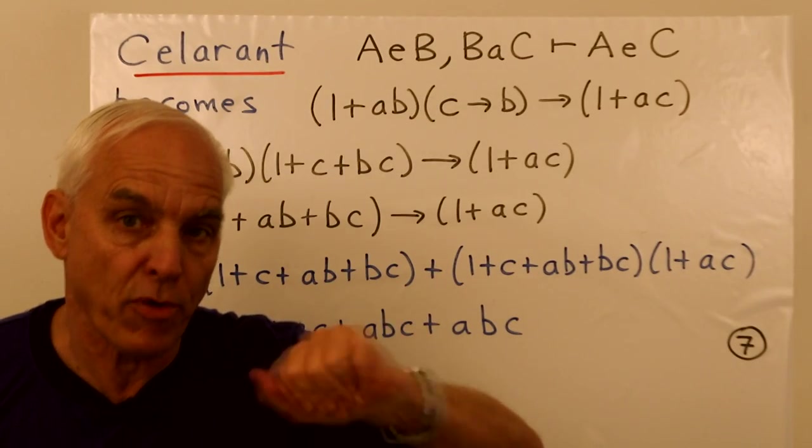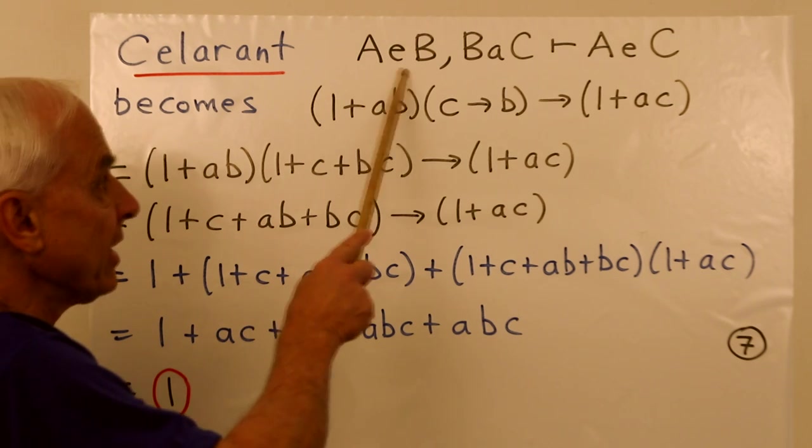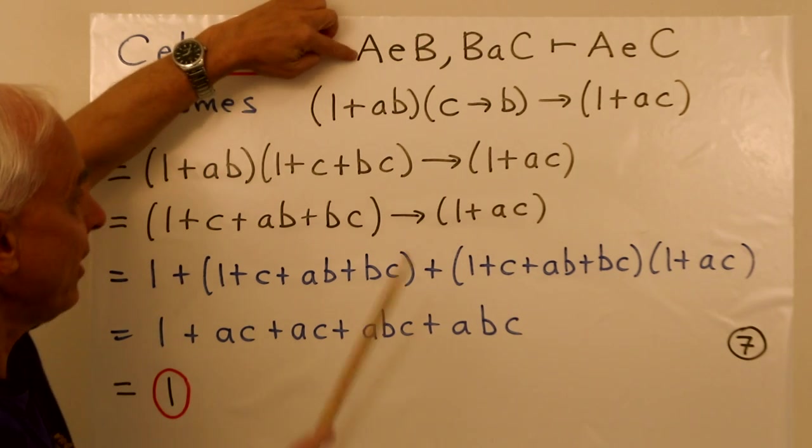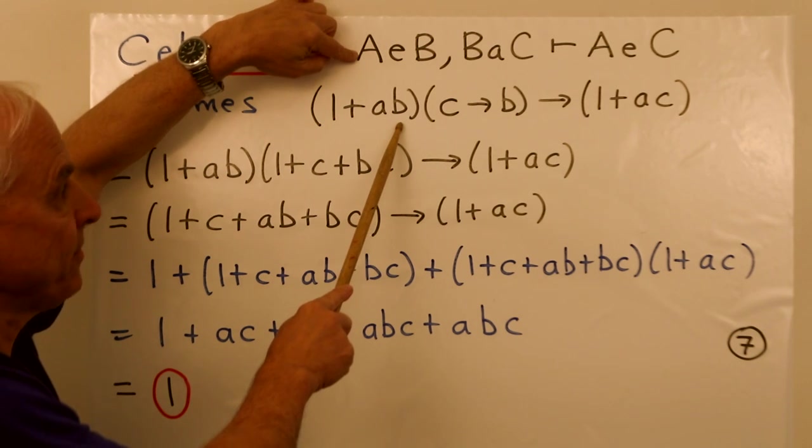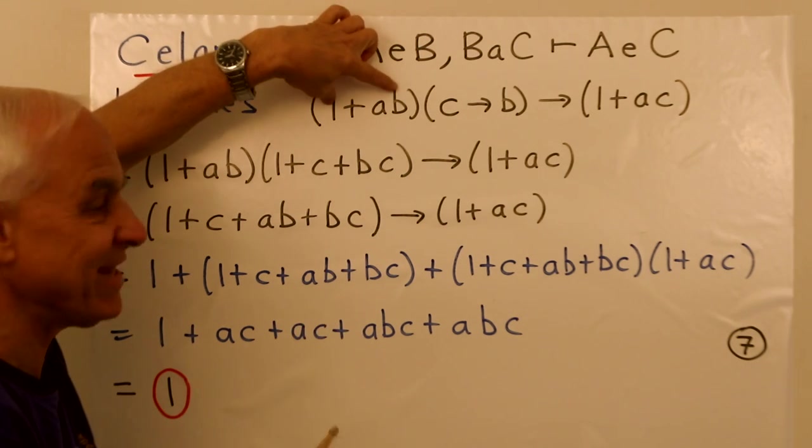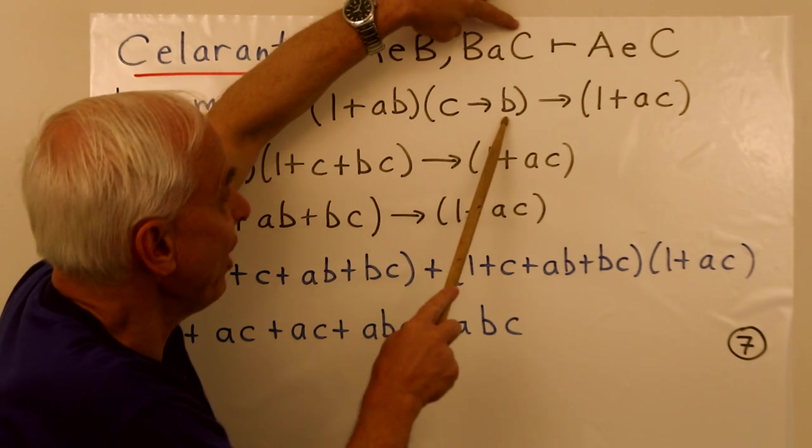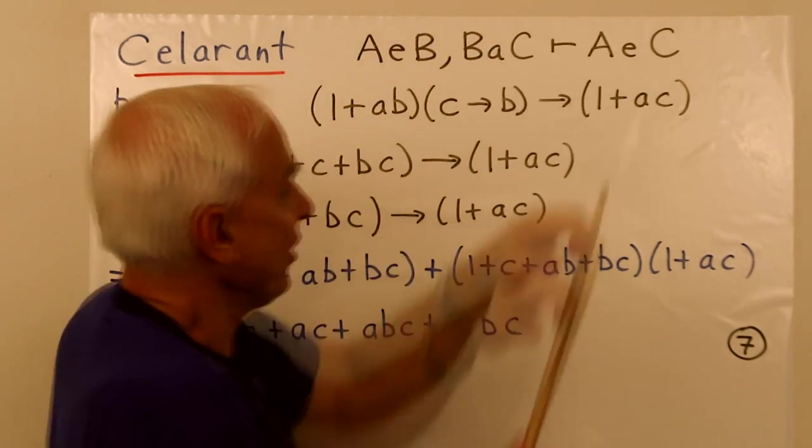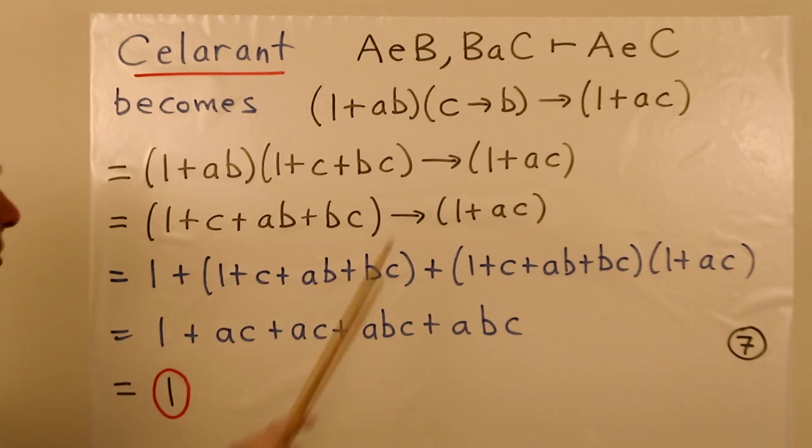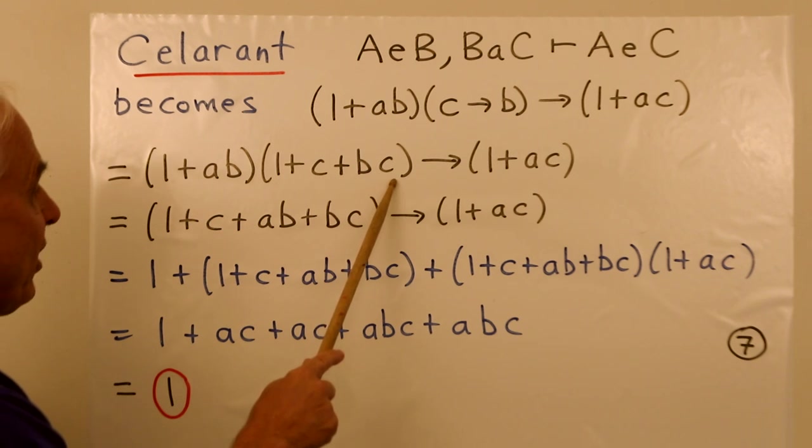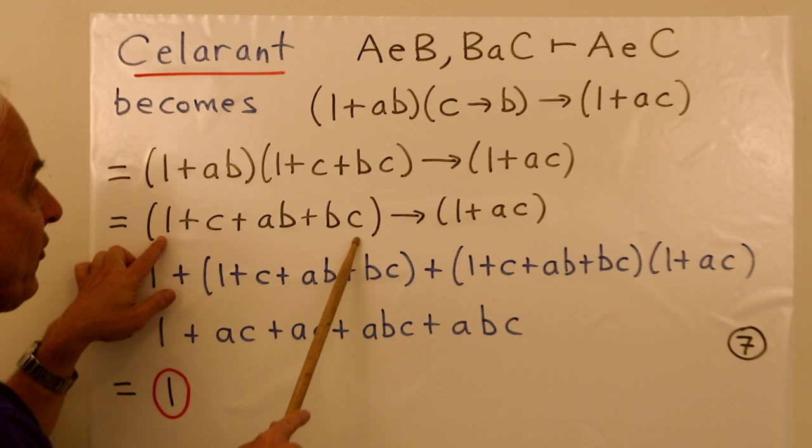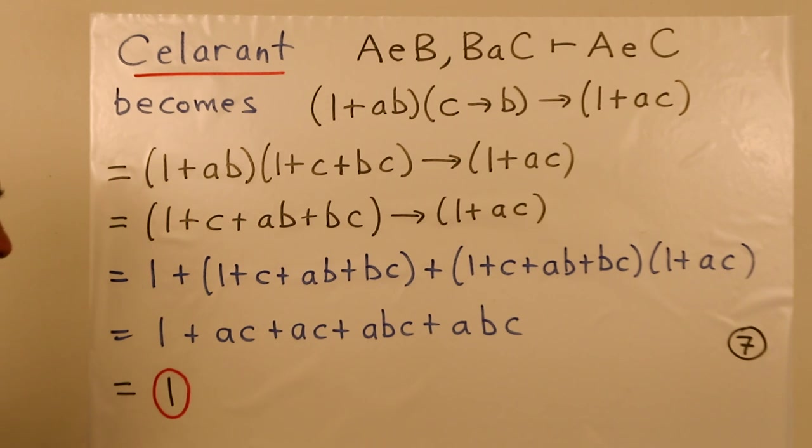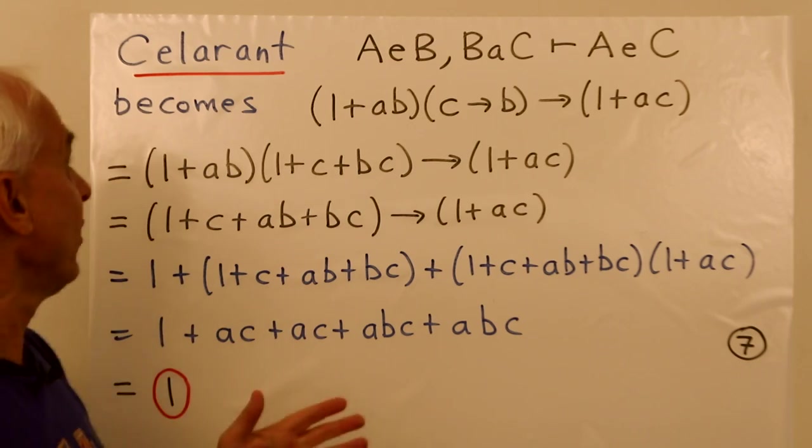The next one on our list of four perfect syllogisms is celerant. A little a B, B little a C implies A little e C. So this one here, no B is an A, is represented algebraically by one plus AB. Assuming this is true is equivalent to assuming this is equal to one. Here's an implication. C implies B. And our conclusion is another e thing. It's no C is an A or one plus AC. We convert everything to algebra of Boole. So we replace this implication with one plus C plus BC. We expand this thing out here. We get one plus C plus AB plus BC. And then this implication becomes one plus the first term plus the product. We simplify that in exactly the same kind of way we just did. And we get one. That proves celerant.